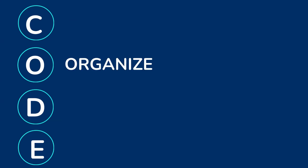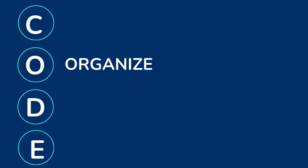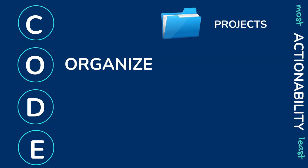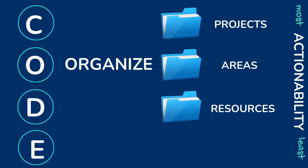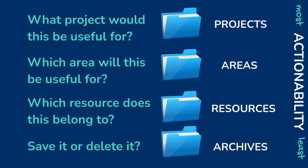Organize. After capturing information, the next step is to organize it in a way that makes it easy to find and use later. This is where the PARA method comes into play, which categorizes information into projects, areas, resources, and archives. The idea is to store information where you will need it, so it's readily available when you are working on something specific.